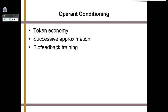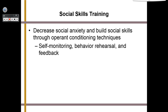We might also use operant conditioning with a token economy — if you perform a target behavior a set number of times, you earn a reward. We also use successive approximation and biofeedback training. There's also social skills training, which decreases social anxiety and builds social skills through operant conditioning techniques like self-monitoring, behavior rehearsal, and feedback.